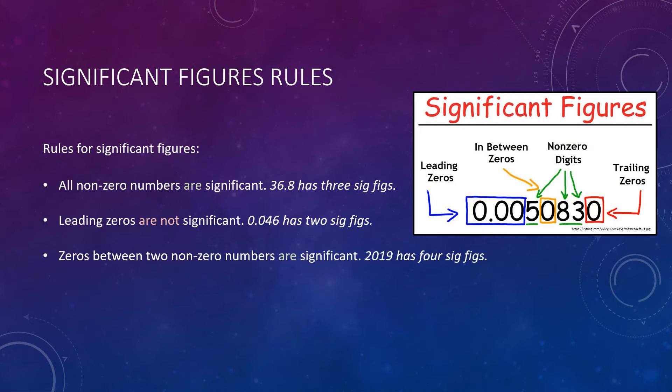Alright. In-between zeros, that are zeros that fall between two non-zero numbers, are always considered significant. So, if we have the number 2019, the zero there is in-between non-zero digits, so it is significant along with everything else. In other words, all four numbers, or digits, in 2019 are significant, so it has four significant figures.